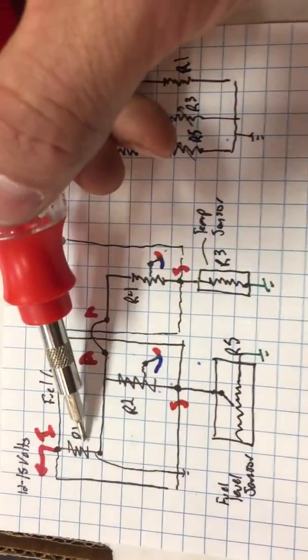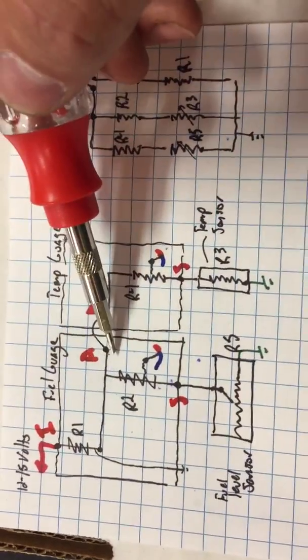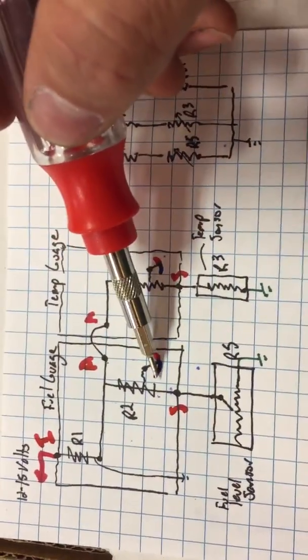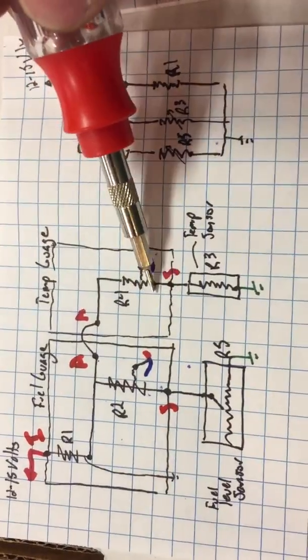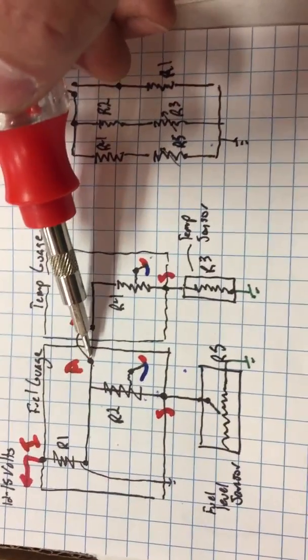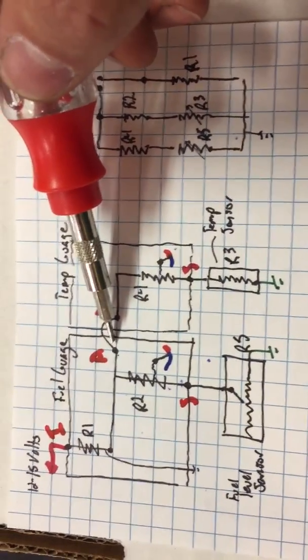But anyhow, 12 volt comes in, drops down to 5 volts, which is supplied both to the fuel gauge and to the temperature gauge, which is, again, this point A. And we're going to take advantage of that here in a little while.